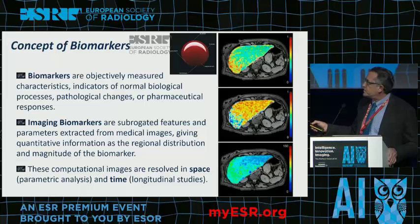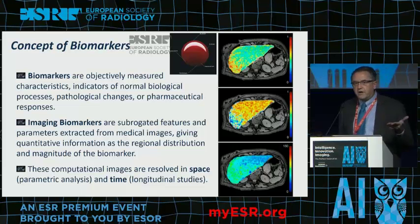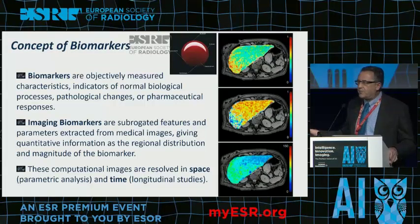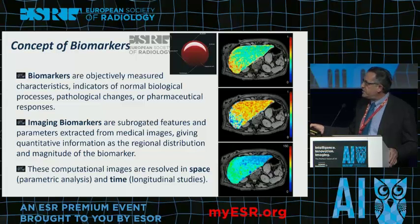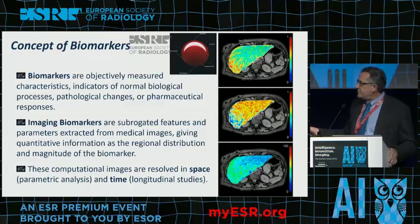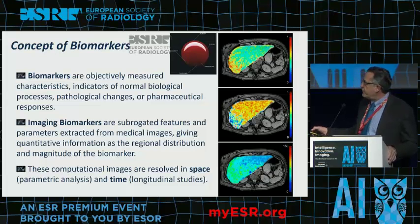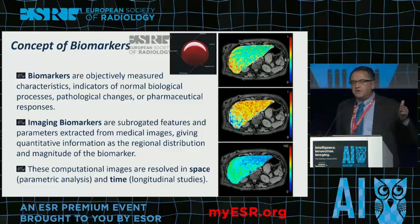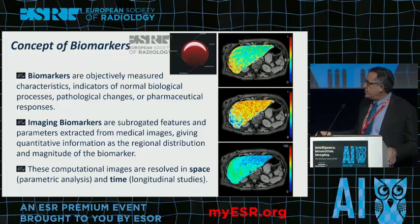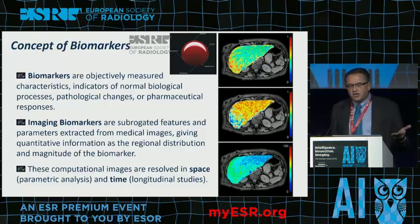Biomarkers are measures — like those obtained from blood samples — that are characteristic indicators of normal biological processes, pathological changes, or pharmaceutical responses. When we apply imaging to biomarkers, we obtain surrogate features and parameters from images that give us quantitative information on regional distribution, meaning they resolve space and can evaluate heterogeneous distributions. They are also resolved in time because we do not destroy the samples, so we can evaluate longitudinal changes whenever we want.